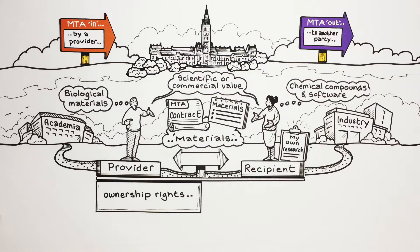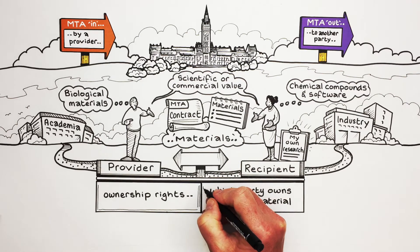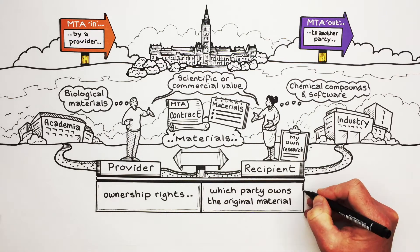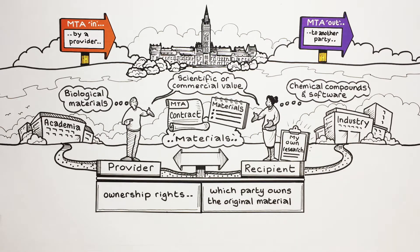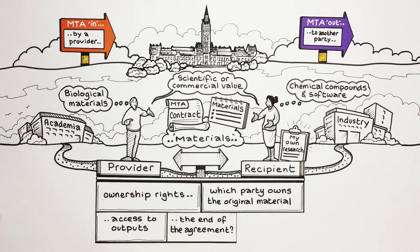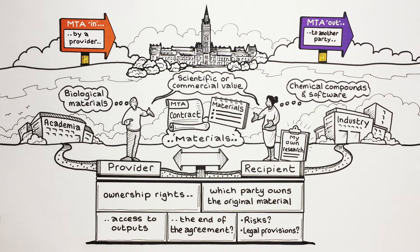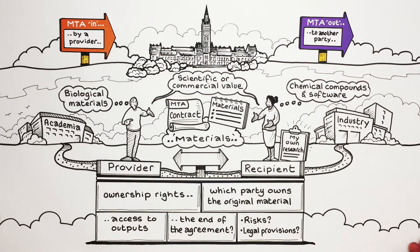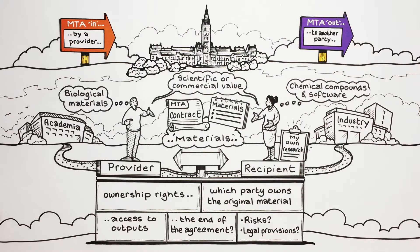An MTA can provide information regarding which party owns the original material, disclose each party's access to outputs from the agreement, put requirements in place for what happens to a material at the end of the agreement, and specify any risks involved in identifying any legal provisions that are required, such as regulations, reporting requirements, warranties or indemnities.